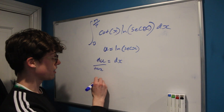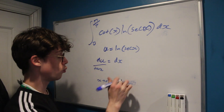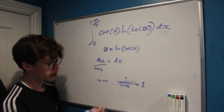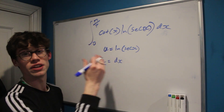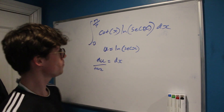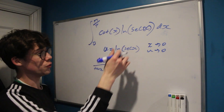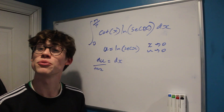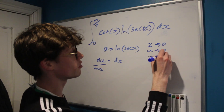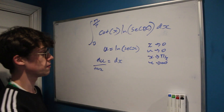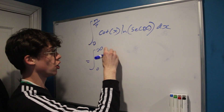Let's think about how our bounds behave. As x approaches 0, sec(x) = 1/cos(x) approaches 1, and ln(1) = 0, so u goes to 0. As x goes to π/2, 1/cos(x) approaches 1/0 which goes to infinity, and the natural log of something approaching infinity is itself infinity, so u goes to infinity.